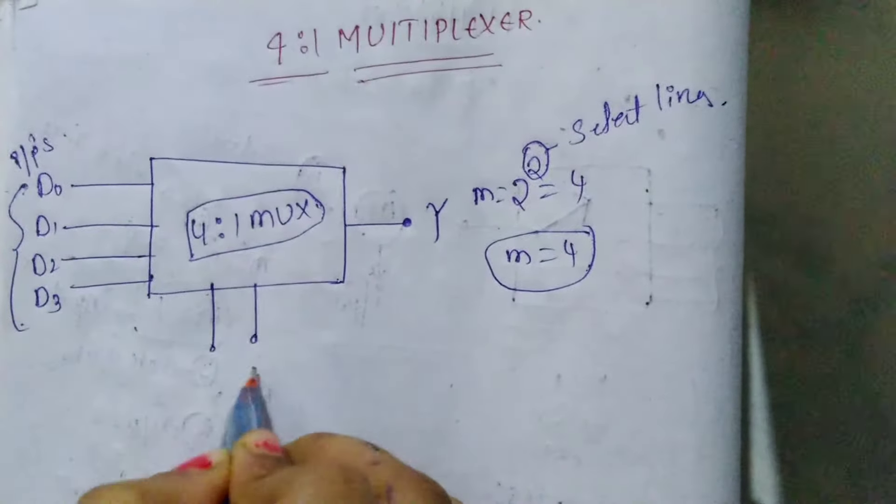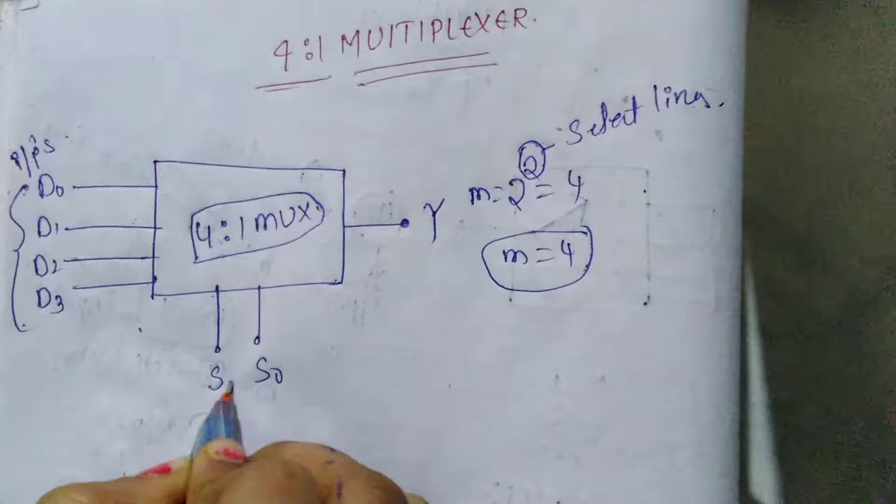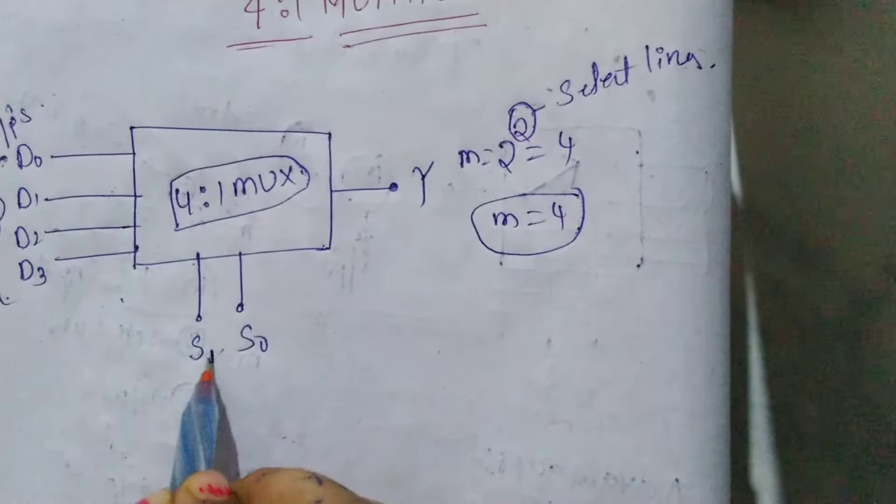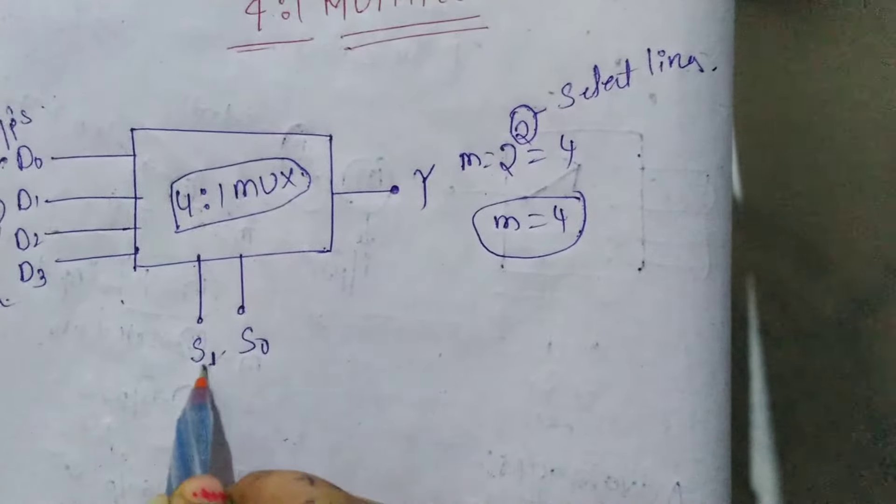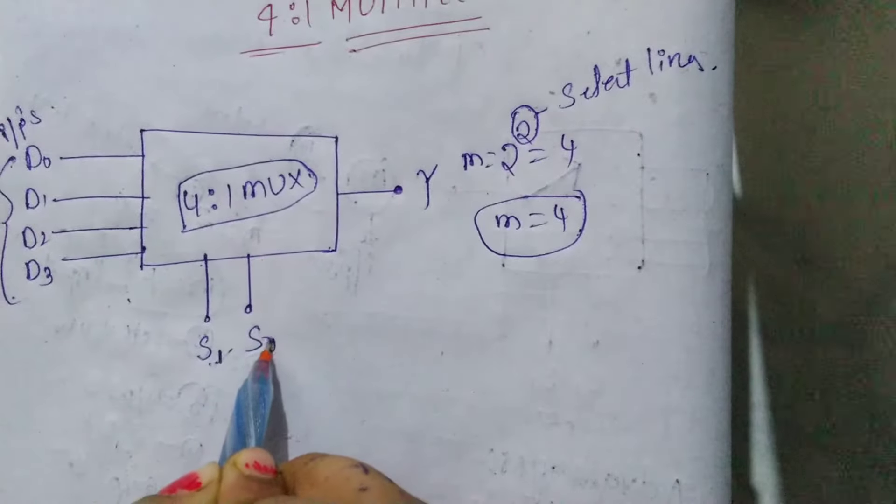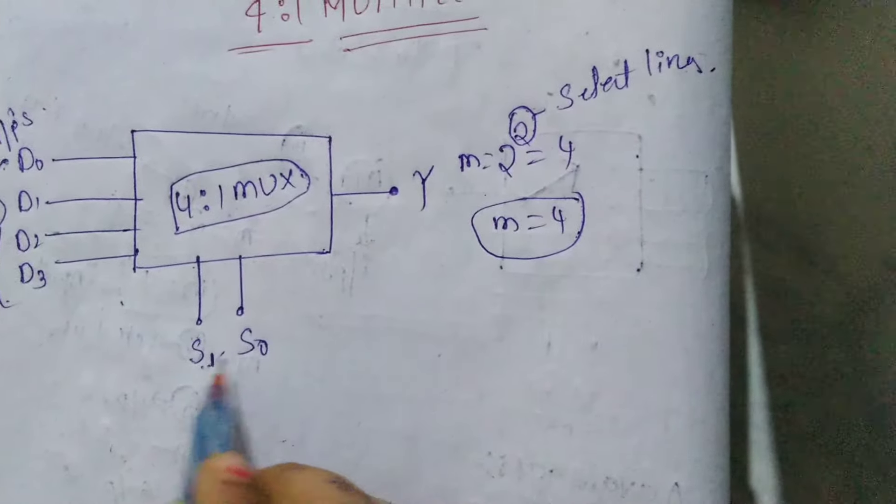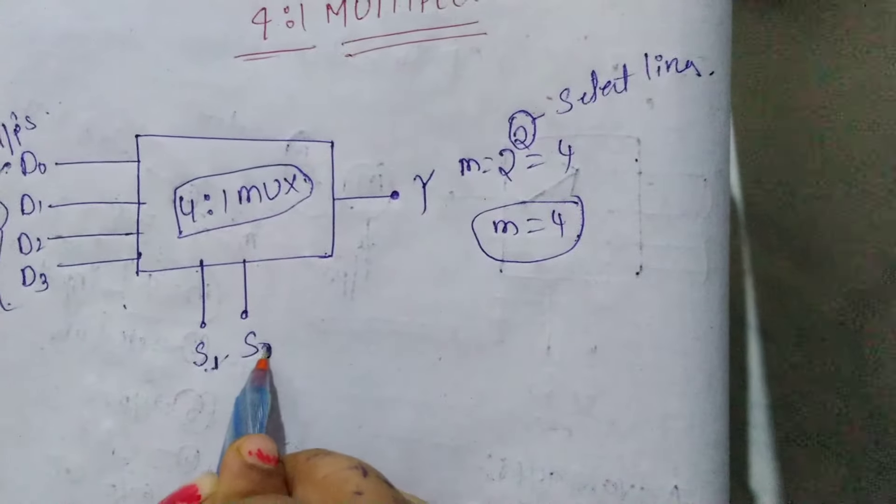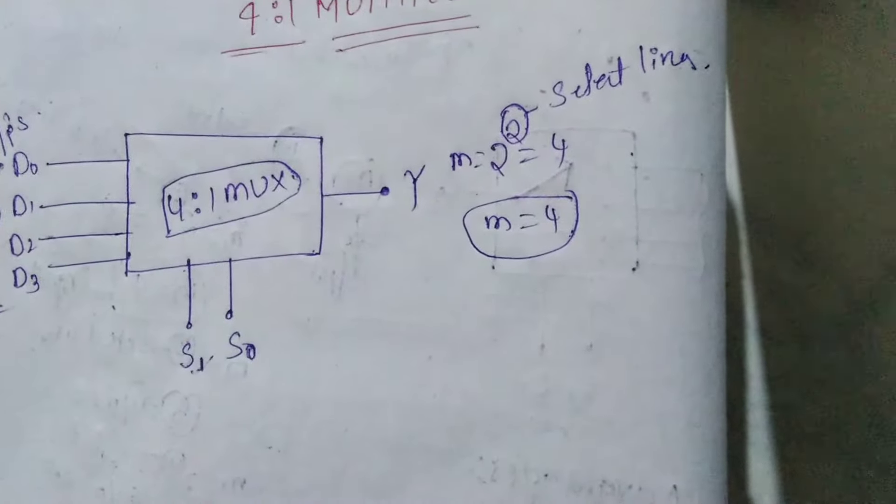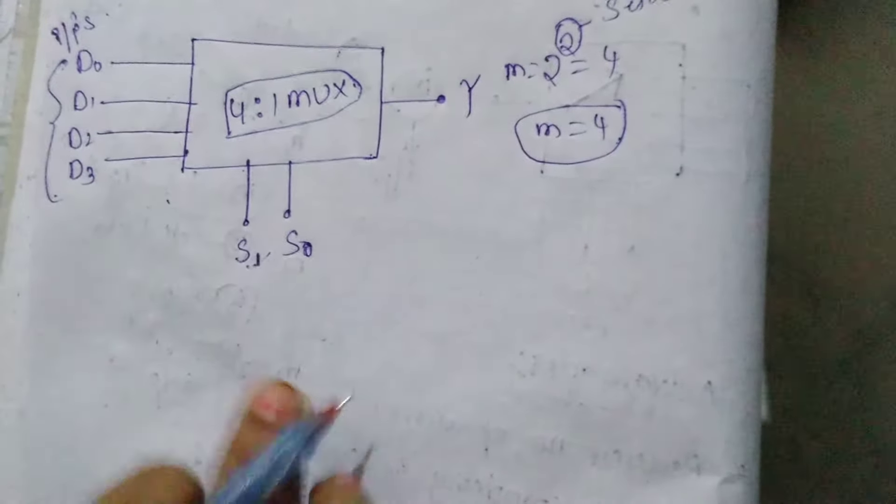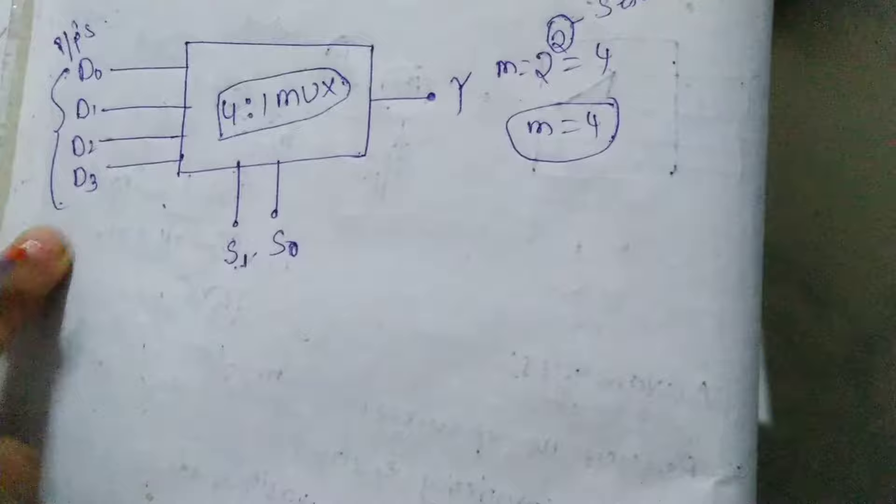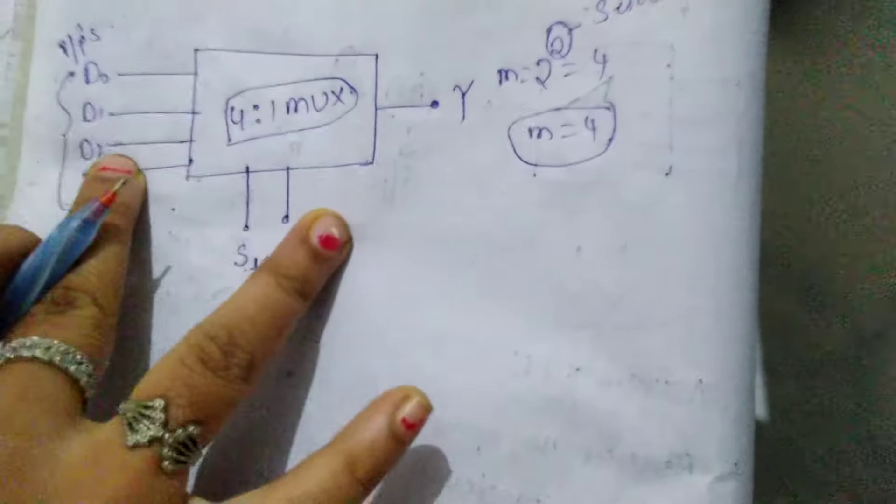So 2 select lines - select lines S0 and S1 control it. In some textbooks or notes, it's written as S0 and S1, or S1 and S2. No problem, it's just an indication of 2 select lines. And 4 inputs.